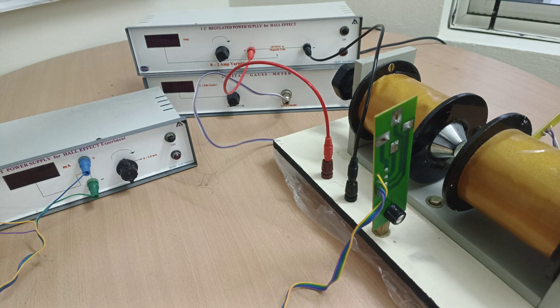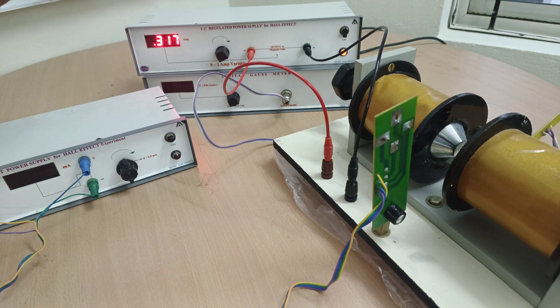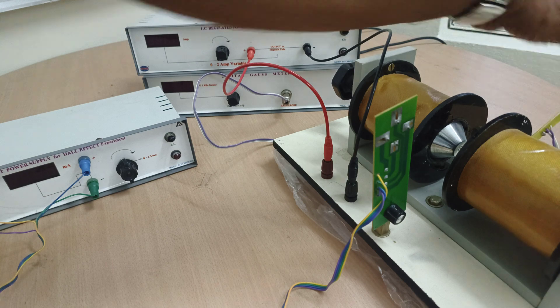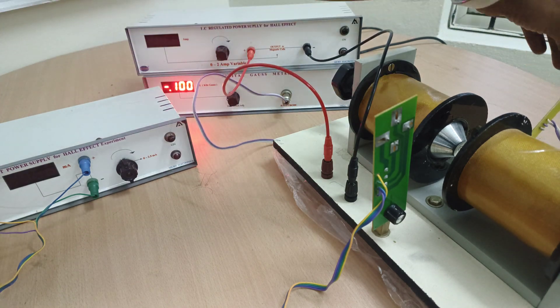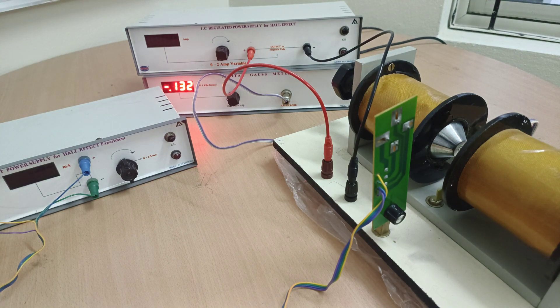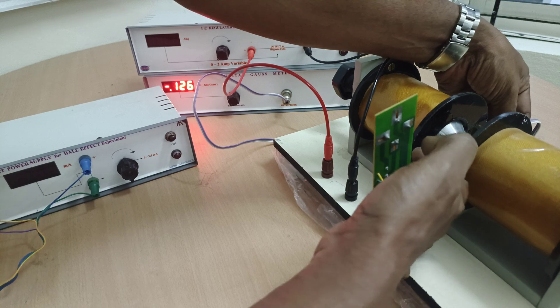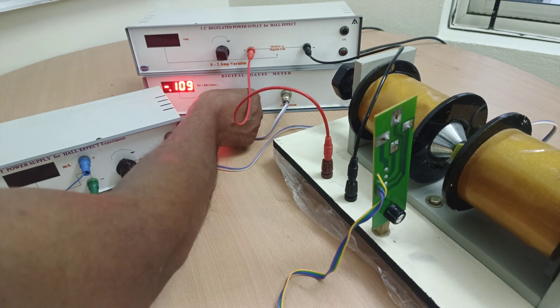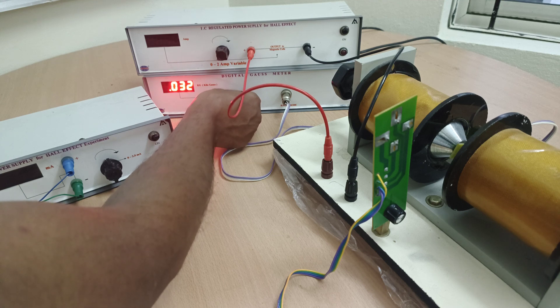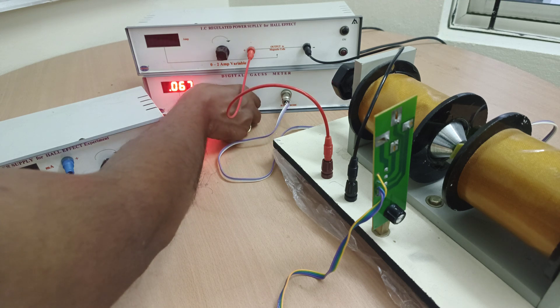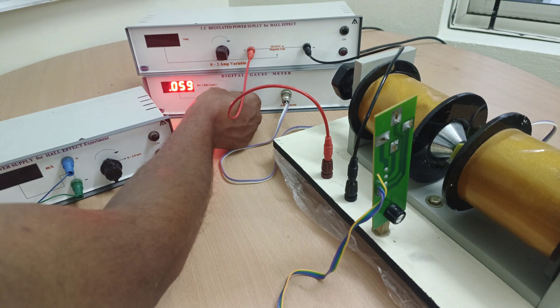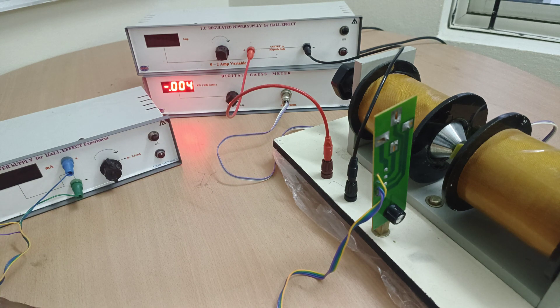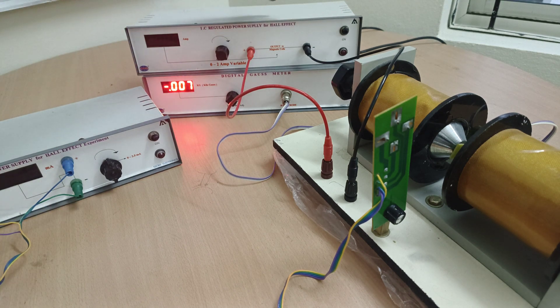Once all connections completed, switch on the power. Before that, switch on gauss meter and insert gauss probe exactly in the middle of the electromagnets and adjust the value, make it zero adjustment. This one is in kilogauss. Once it is completed, switch on the IC regulated power supply.